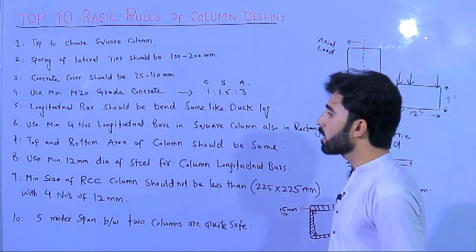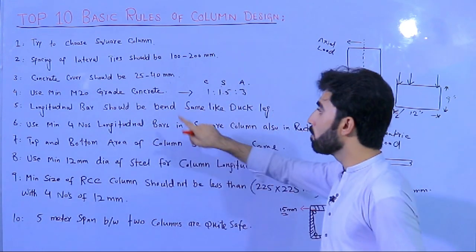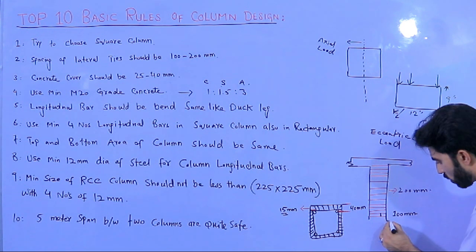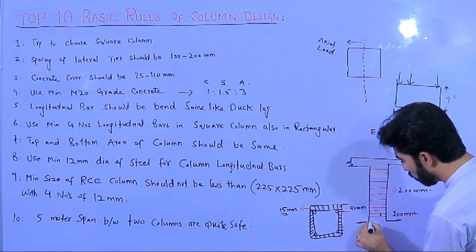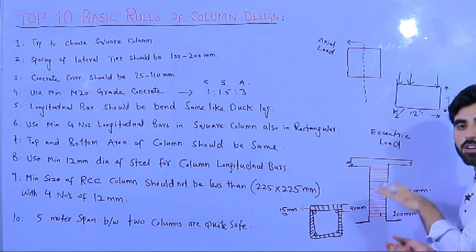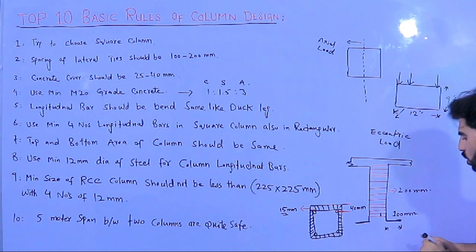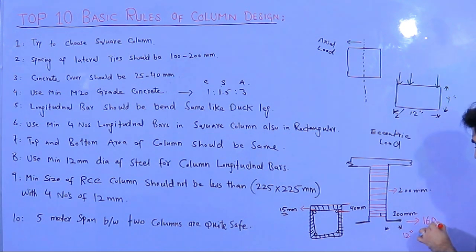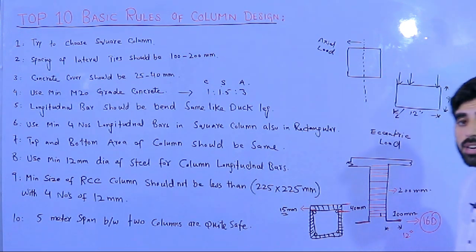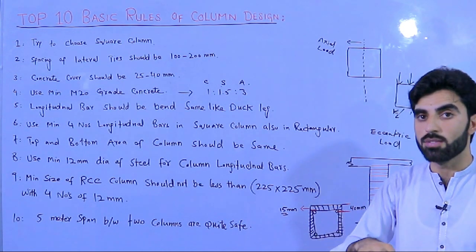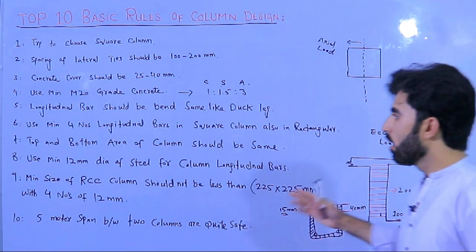The fifth basic rule: longitudinal bars at the bottom on the footing or foundation should be bent like a hook (Douglick). The development length should not be less than 12 inches, or use 16D where D is the diameter of the longitudinal bar. This hook supports the structural load and transfers the load from column to foundation easily.